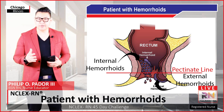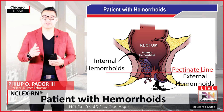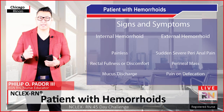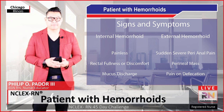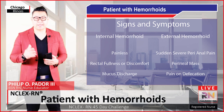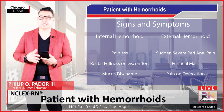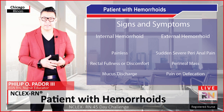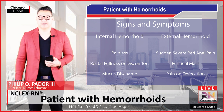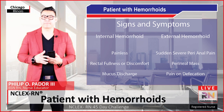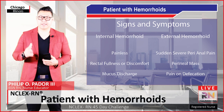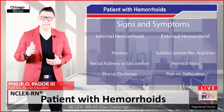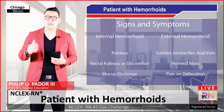Enlargement can be from external hemorrhoids or from internal hemorrhoids. Internal hemorrhoids are located above the pectinate line. The signs and symptoms differ depending on whether it's external or internal. An internal hemorrhoid can often be painless, but there can be a feeling of rectal fullness, discomfort, and mucus discharge. External hemorrhoids are quite painful — they can cause sudden severe perianal pain, a perineal mass may be felt, and there can be pain on defecation, particularly if thrombosis occurs. This makes sense because external hemorrhoids are below the pectinate line, which is ectoderm in origin, producing very well-localized pain.